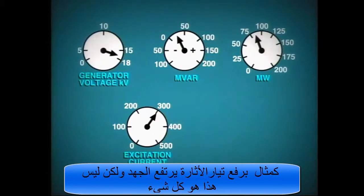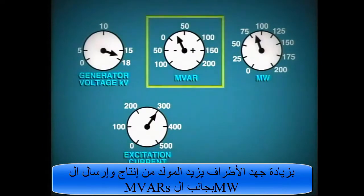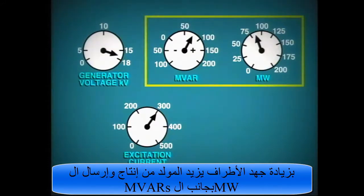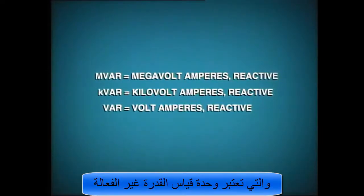But that's not all that happens. As terminal voltage is increased, the generator will produce and transfer more megavars into the power system. On most units, the megavar output of the generator is indicated right alongside the megawatt output. The term megavars stands for megavolt amperes reactive, which is actually the unit of measurement for reactive power.